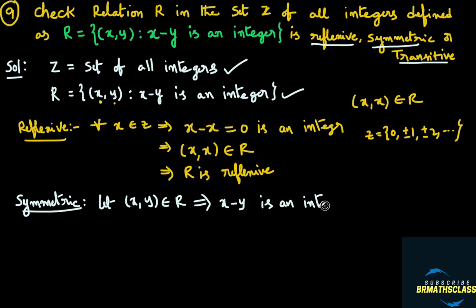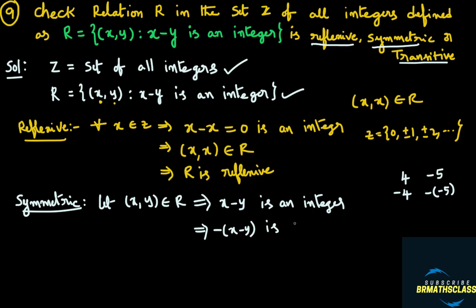We take an ordered pair (x, y) belonging to R. From the definition of the relation, if (x, y) belongs to R, we can say that x minus y is an integer. If x minus y is an integer, then minus of (x minus y) is also an integer. For example, if 4 is an integer, then minus 4 is also an integer. If minus 5 is an integer, then minus of minus 5, which is 5, is also an integer. So minus of (x minus y) is also an integer.